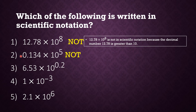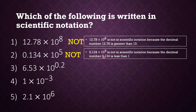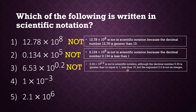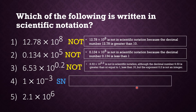Number two, .134 times 10 raised to 5, is not in scientific notation because the decimal number is less than one. Number three is also not in scientific notation because the exponent is not an integer — it is a decimal. Number four has 1 as the coefficient and negative 3 as an integer exponent, so it meets the requirements for scientific notation.